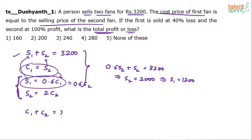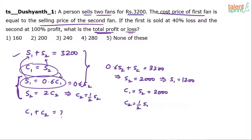Now we find C1 and C2. We know C1 equals S2, so C1 equals 2000. Since S2 equals 2C2, we have C2 equals half of S2, which is half of 2000, so C2 equals 1000. Therefore C1 plus C2 equals 2000 plus 1000, which is 3000.